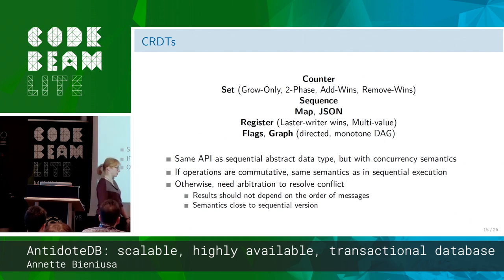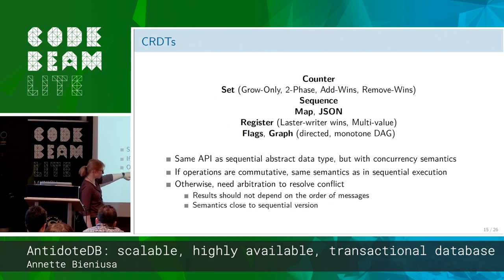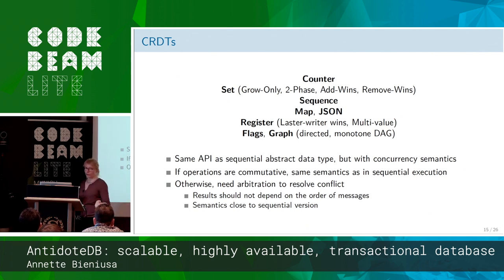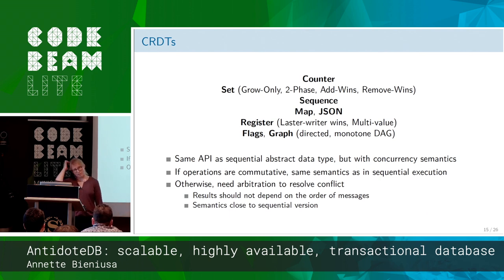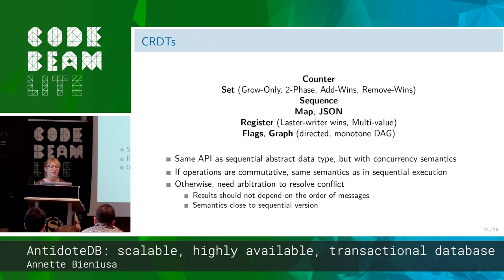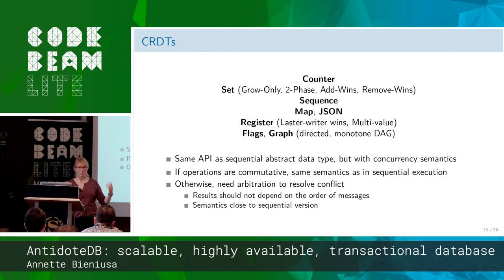In cases where operations are not naturally commuting, you need some form of arbitration to resolve conflicts for clashing updates. The result of the resolved state should not depend on the order in which messages or updates are applied, and we also want semantics close to the sequential version. For example, if you have a set and you add and remove the same element, they won't commute. In a flavor of CRDT called the add-wins set, if a deletion and an add of the same element happen concurrently, the add will win — so the element stays in the set.